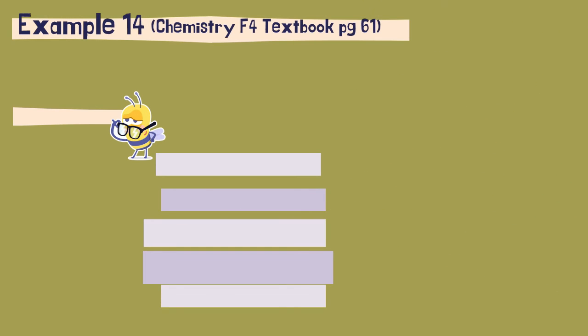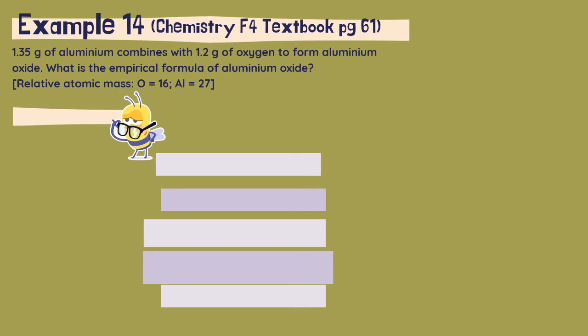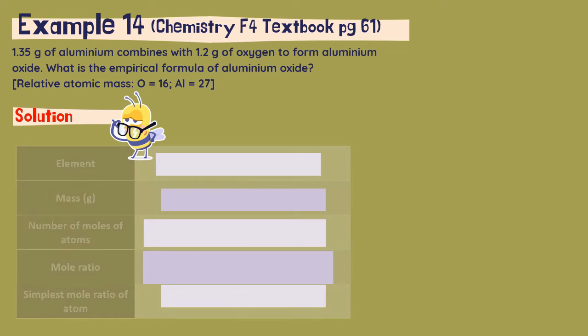Let's take a look at example 14 in the Chemistry Form 4 textbook, page 61. The question reads: 1.35 grams of aluminium combines with 1.2 grams of oxygen to form aluminium oxide. What is the empirical formula of aluminium oxide, given that the relative atomic mass of oxygen is 16 and aluminium is 27? Let's discuss the solution. In order to find the solution, we have to build up a table.